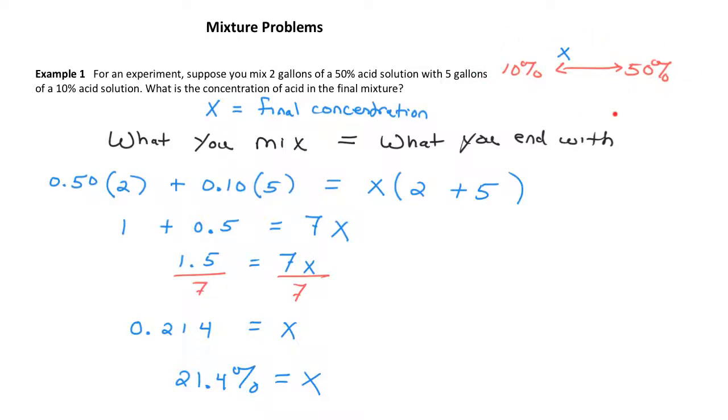If you think about the answer to this problem, it does make sense in terms of what we've talked about. It's a value between 10 and 50 percent, but it's closer to 10 percent than it is to 50 percent. So if you mix two gallons of a 50 percent acid with five gallons of a 10 percent acid, the concentration settles at about 21.4 percent.